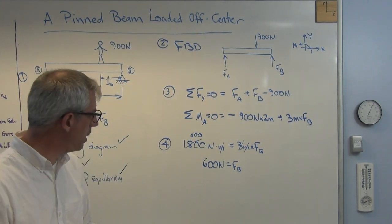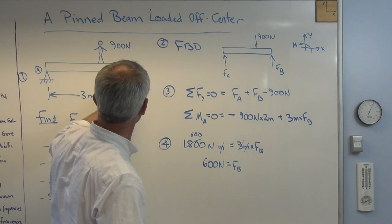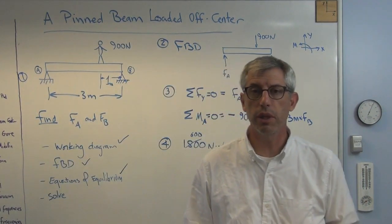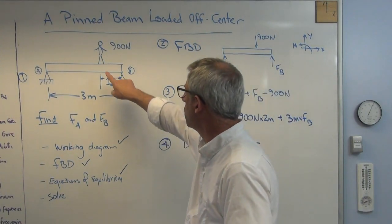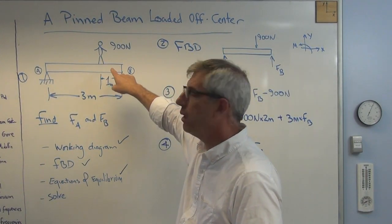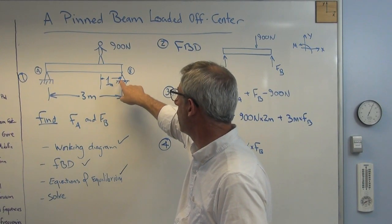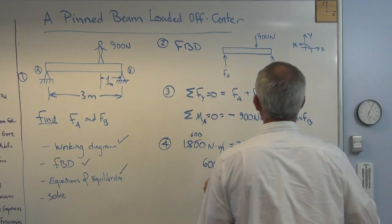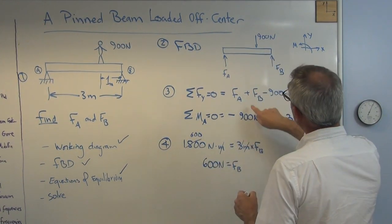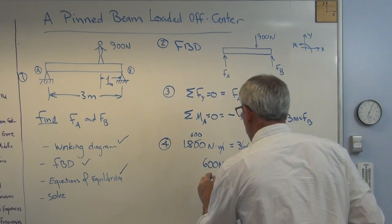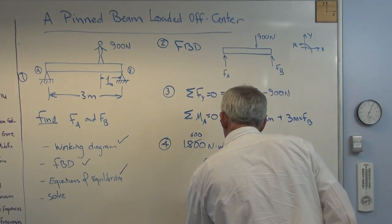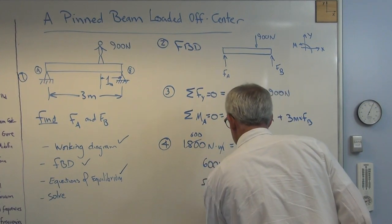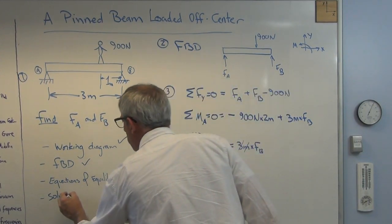Does it make sense that the load at B, the reaction force at B would be higher than the reaction force at A? Yeah, it does. Because it means if you're standing closer to that end, it makes sense that this end would have to bear a greater portion of your load than that does. So we've got that. Last thing to do is plug FB into that equation right there. And we'll find that FA is 300 newtons. So there's your two solutions.